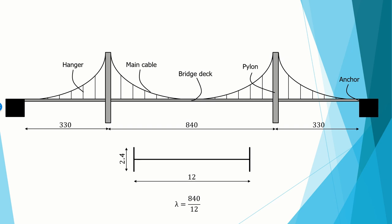Other suspension bridges of that time had much lower slenderness ratios: the George Washington Bridge had a ratio of 1 to 33, and the famous Golden Gate Bridge had a ratio of 1 to 47. Also remarkable is the very limited height of the plate girders, resulting in a slenderness of 1 to 350. Later in this video we will see that those limited dimensions played an important role in the collapse.